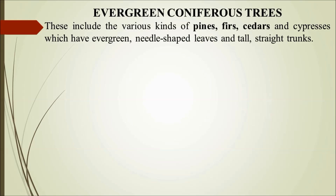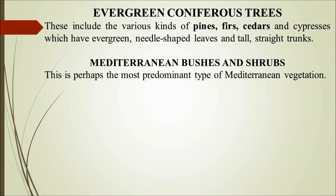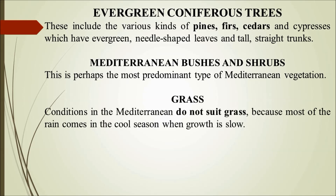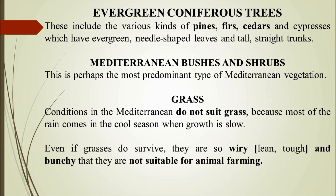In areas with slightly cooler winters, coniferous trees such as pines, firs, and cedars — with needle-shaped leaves and straight trunks — are found. Mediterranean bushes and shrubs also dominate under dry conditions. Grasses do not suit Mediterranean conditions well because most rain comes in winter; even if grasses survive they are very wiry and tough, and do not dominate. Because of the absence of well-developed grasses, animal rearing and cattle farming are not suitable in the Mediterranean biome.